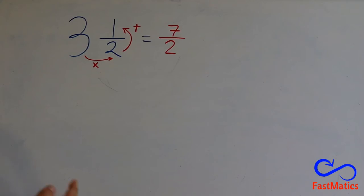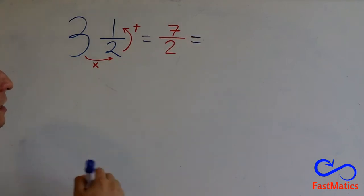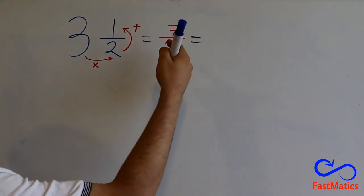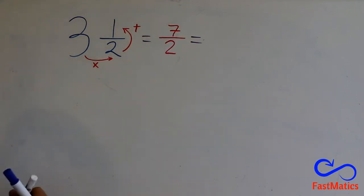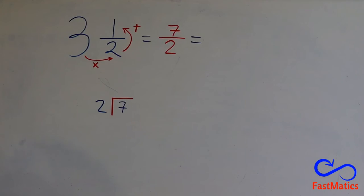But what if I had an improper fraction and I wanted to convert it to a mixed number? Let's see. I have to divide 7 by 2. Very simple. Always, I'm going to write the number that is in the numerator inside and the number in the denominator outside.